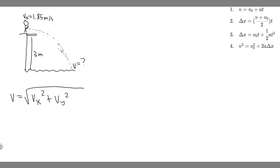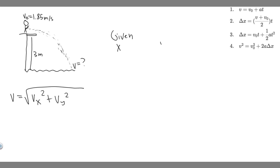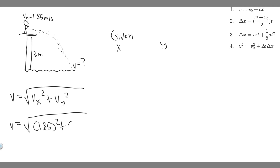Let's set up the given information. The velocity in the x is not going to change at all — it stays constant. So her initial velocity equals her final velocity in x, meaning vx is still 1.85 m/s. What we need to find is vy. So we can already write: v = √(1.85² + vy²), and now we just need to find vy².